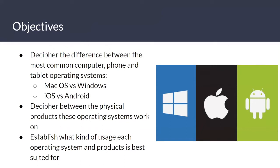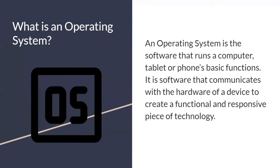The most common ones are macOS and Windows for computers, and iOS and Android for tablets or phones. We're going to decipher between the physical products these operating systems work on and establish what kind of usage each operating system has and what products it's best suited for.